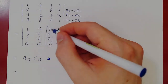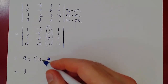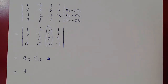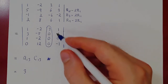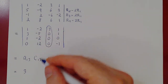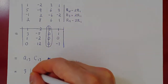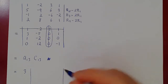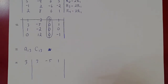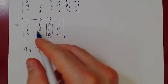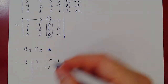What is a1,3? It's just 3. The cofactor has two parts: negative 1 to the 1 plus 3 is negative 1 to the 4, which is positive 1. C1,3 is the determinant of the matrix obtained after deleting the first row and third column. We now have a 3 by 3 matrix with first row: 3, negative 5, 1; second row: 1, negative 2, 0; and third row: 0, 12, negative 1.